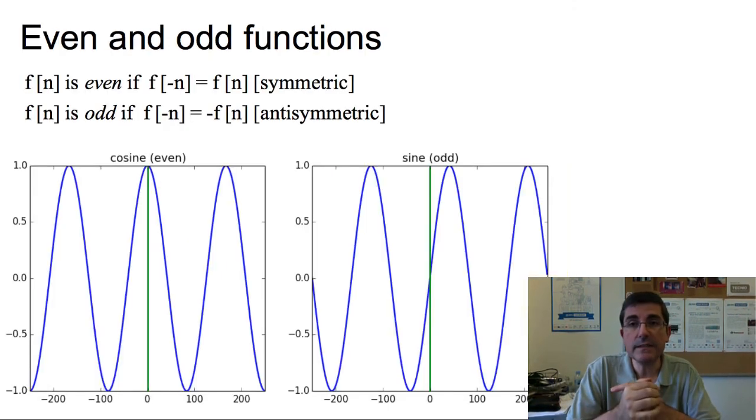Another mathematical concept that will appear in our signal analysis operations is the one of even and odd functions. So, a function is even if the negative part of the function, so if we say f of minus n, is equal to f of n. So, that is what we call a symmetric function. An odd function is when f of minus n is equal to the minus f of n. And this is what we call an anti-symmetric signal.